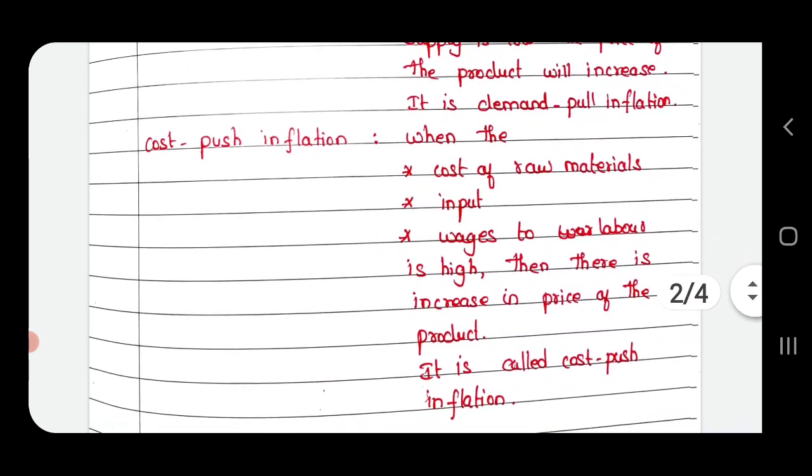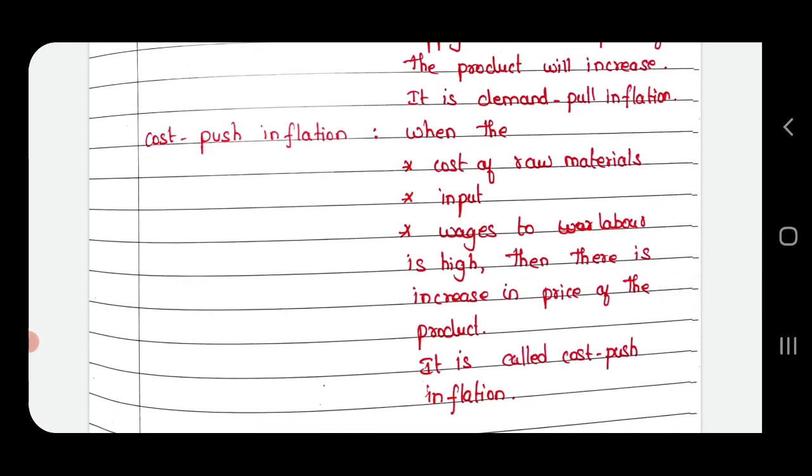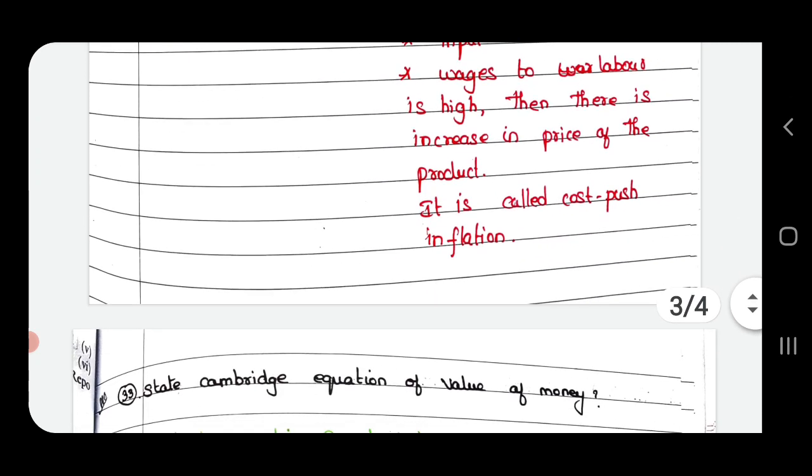Cost pull inflation: When the cost of raw materials, input, wages to labor is high, then there is increase in price of the product. It is called cost pull inflation.